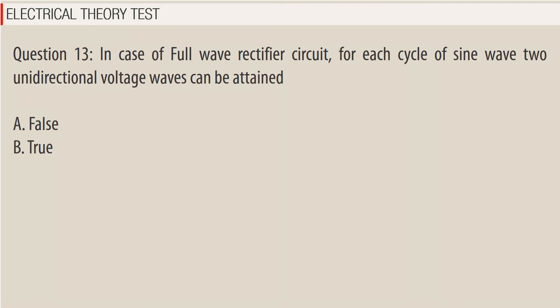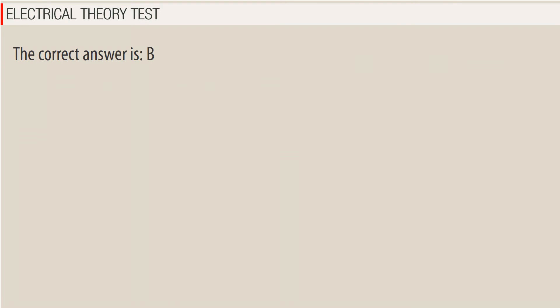Question 13. In case of a full wave rectifier circuit, for each cycle of sine wave, two one-directional voltage waves can be attained. A. False. B. True. The correct answer is B — True.